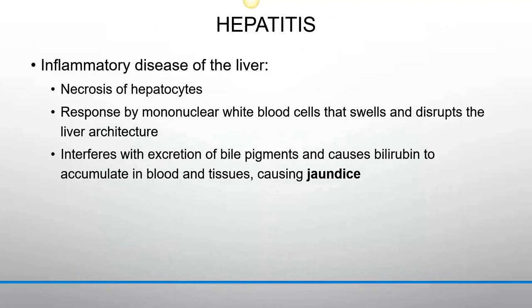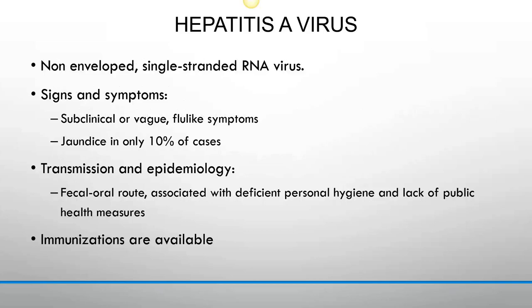Hepatitis: hepat- refers to the liver, -itis means inflammation, so hepatitis is inflammation of the liver. It involves necrosis of hepatocytes and a response by mononuclear white blood cells that disrupts the liver architecture. It interferes with excretion of bile pigments, causing bilirubin to accumulate in blood and tissues, producing jaundice — yellowing of the skin due to liver failure. Jaundice is most obvious in the whites of the eyes, which is especially useful for identifying it in patients of color.